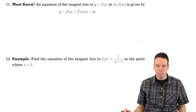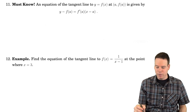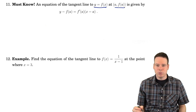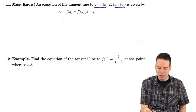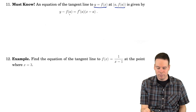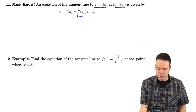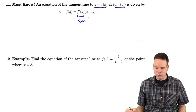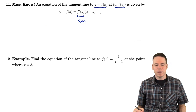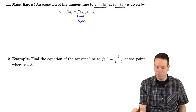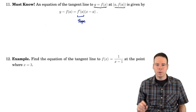Coming back to the tangent line problem: if we have a function y = f(x) and a point (a, f(a)) that we're interested in, what is the equation of the tangent line? We can write that down in terms of the derivative. The equation of the tangent line is y minus the y-coordinate of the known point equals the slope times x minus the x-coordinate of the known point. The slope is what we're calling the derivative, f prime of a.